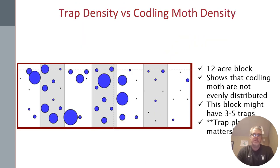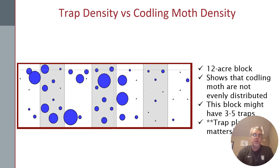Especially in the first generation, codling moth densities tend to be low and highly variable within the typical orchard. These are data from Vince Jones and Mike Doerr showing a 12-acre block that was intensively trapped, and it shows that codling moth populations are far from evenly distributed — in fact, they're highly uneven. In the real world where growers put a trap every two and a half or five acres, this 12-acre block likely only has three to five traps in it. Depending on where you put those traps, you might see an extremely high density of codling moth or perhaps none.